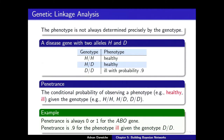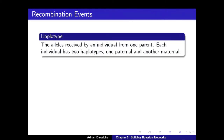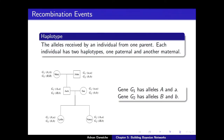There's a key concept coming up: the haplotype. The alleles received by an individual from one parent are called the haplotype. For a particular individual, every gene has two components — one from the father and one from the mother. If you take the string of alleles obtained from one of the parents, that's called the haplotype — one component per gene.